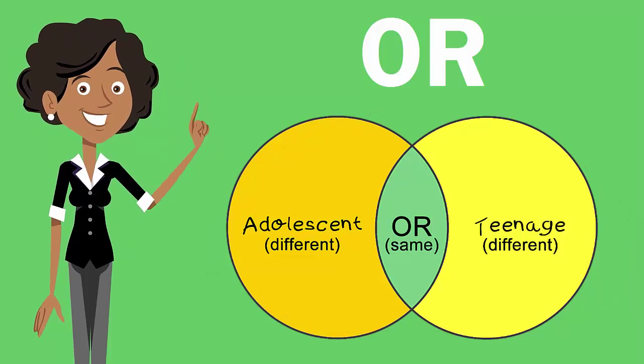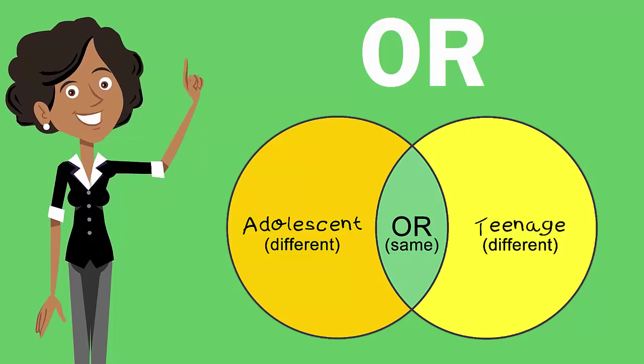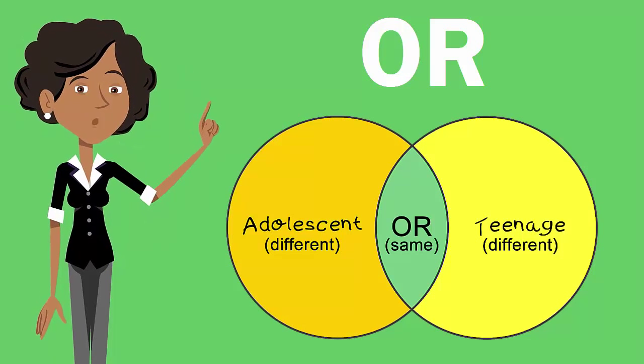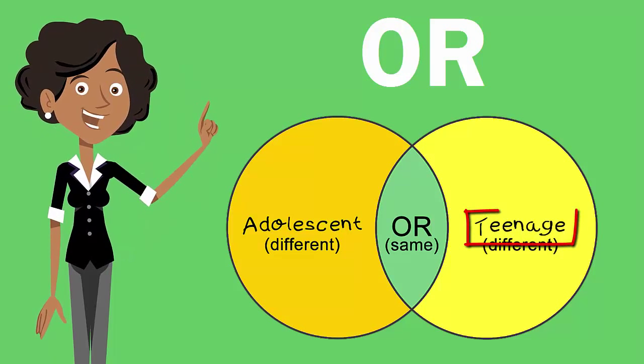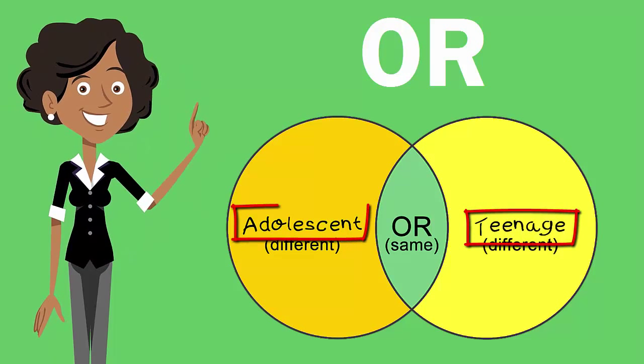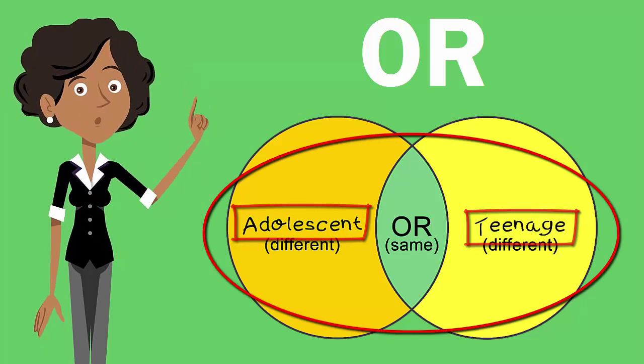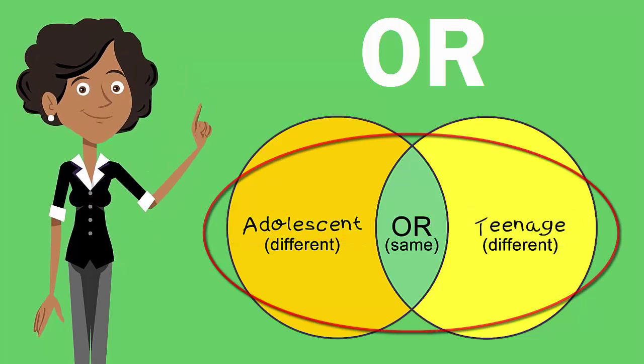OR is best used when searching for synonyms. For example, if searching 'teenage' or 'adolescent', your results will have either 'teenage', 'adolescent', or both words in the results.